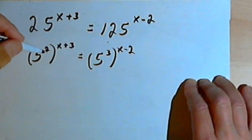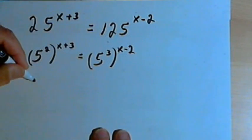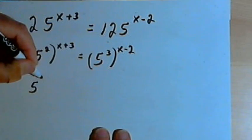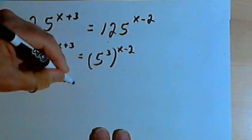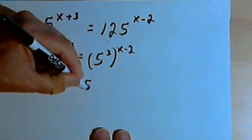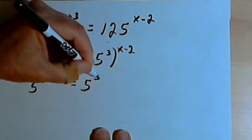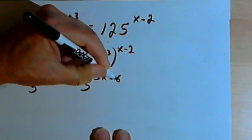And now I'll multiply the exponents times the exponents. I'll get 5 to the 2x plus 6 equals 5 to the 3x minus 6.